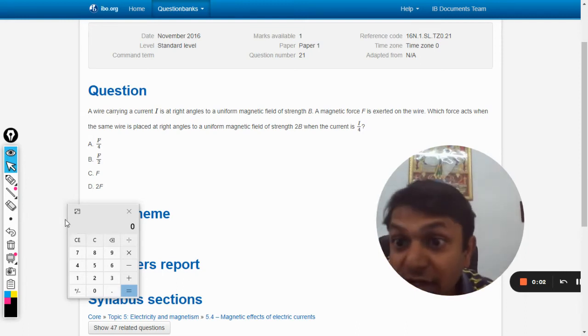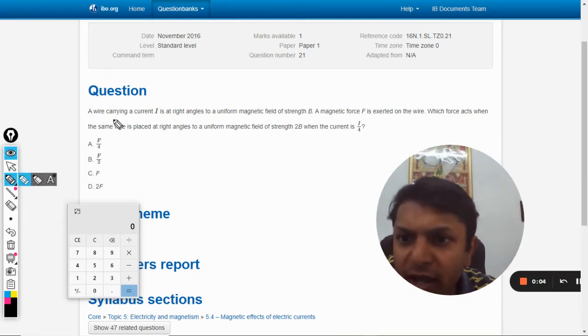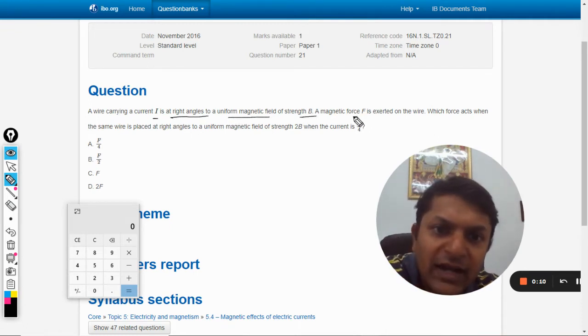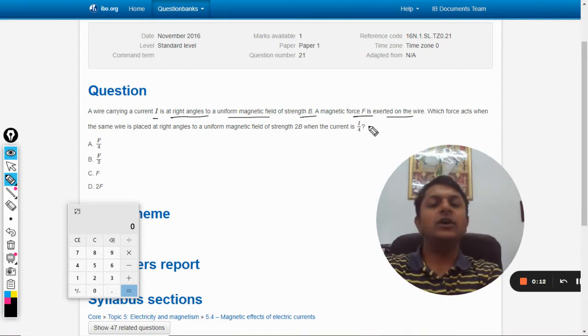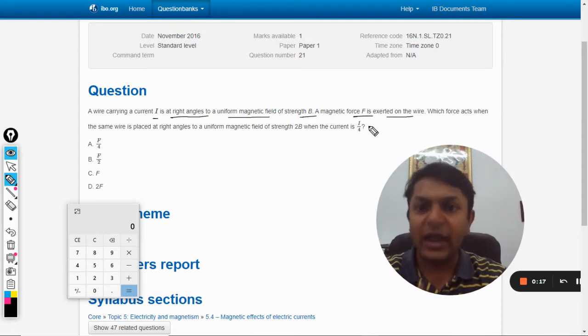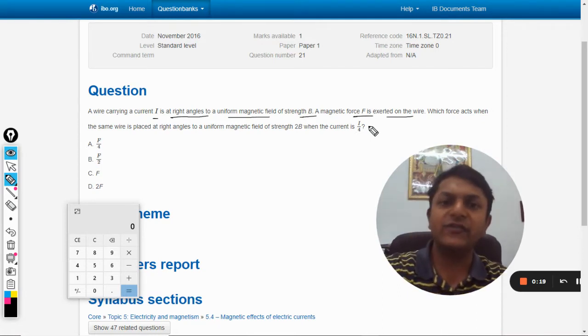Okay dear students, let us see this question. A wire carrying a current i is at right angles to a uniform magnetic field of strength b. The magnetic force f is exerted on the wire. Which force acts when the same wire is placed at right angles to a uniform magnetic field of strength 2b when the current is i by 4?